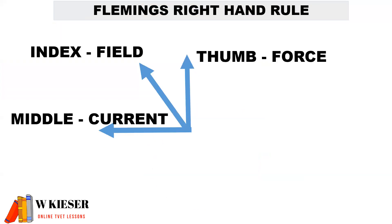According to Fleming's right-hand rule, the thumb will point to the direction of force, the index finger in the direction of magnetic field, and the middle finger in the direction of current flow.